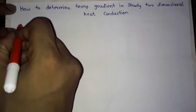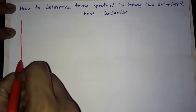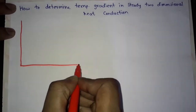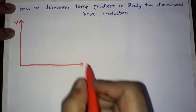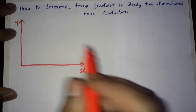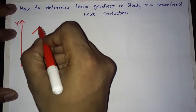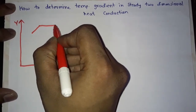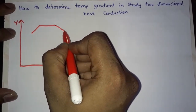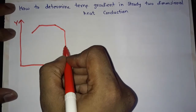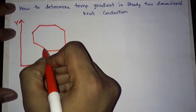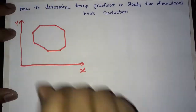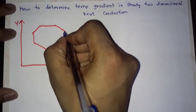Friends, suppose here this is the y-axis and here this is the x-axis. We consider one object — suppose this is the object. Here, consider this surface.